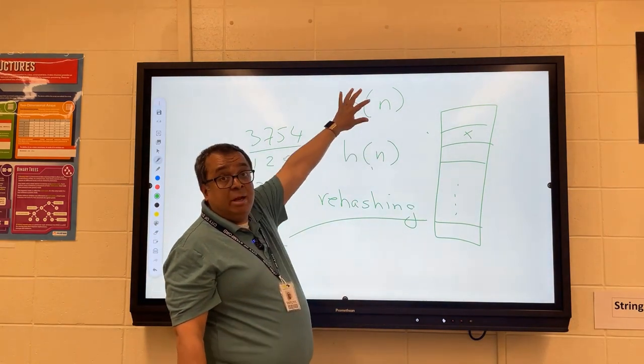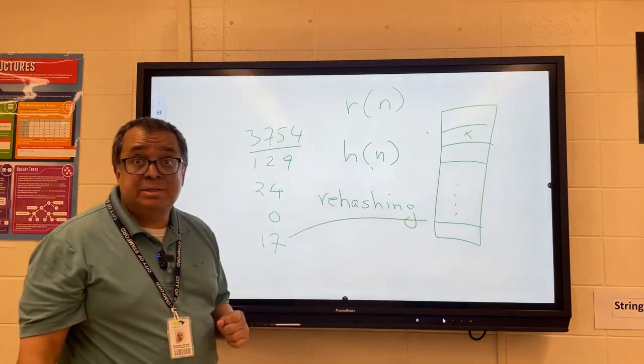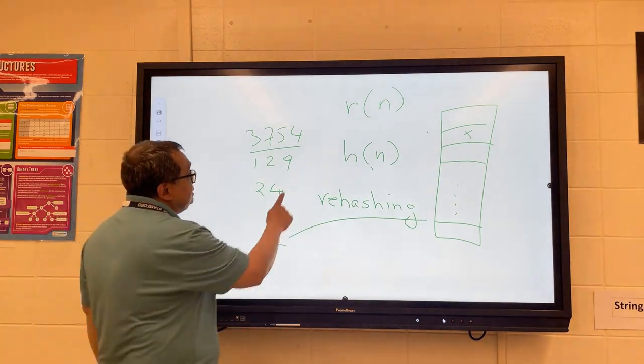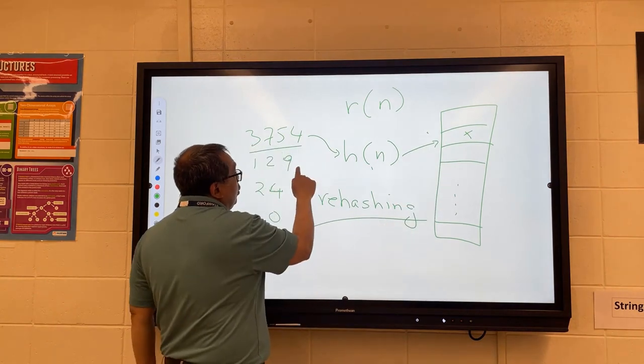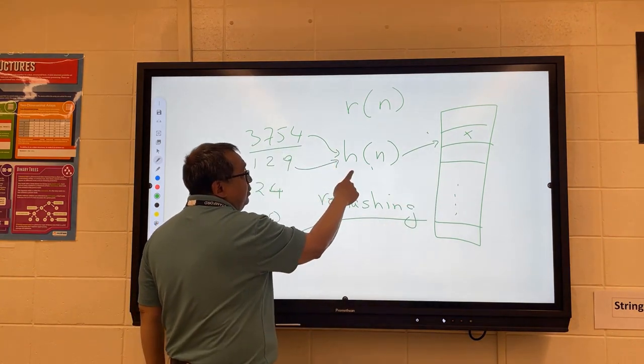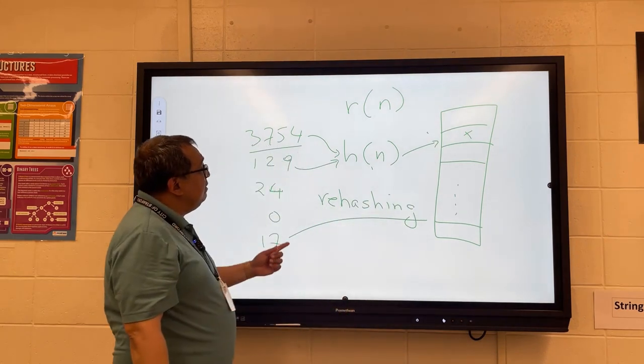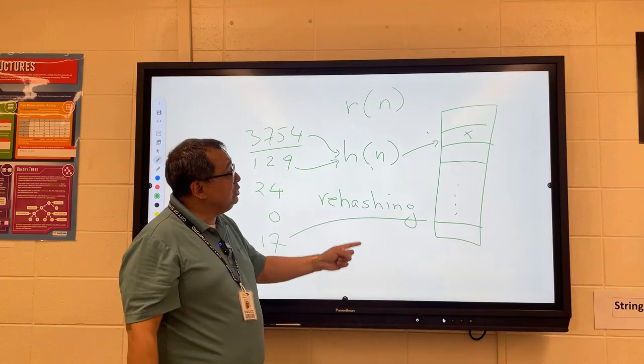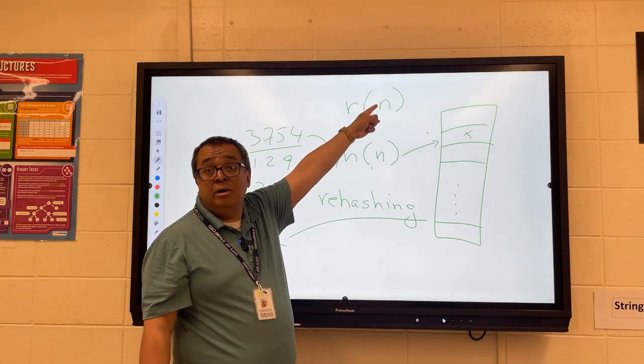Now there's some variations on this that I want to discuss with you. One variation is that when we pass this number through here and it brings us over here, that's fine. When we pass this 129 through here and we get a collision here, instead of taking the 129 and passing it through here, we could actually take what the output is and pass it through there. That's another way we could do it.